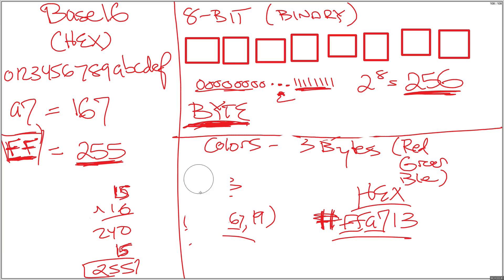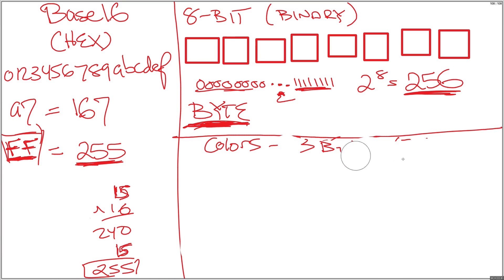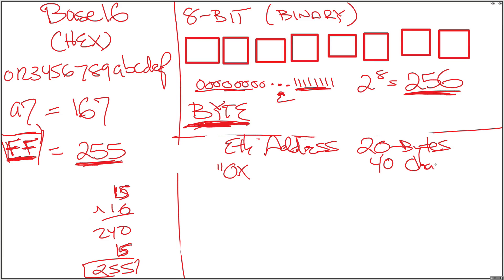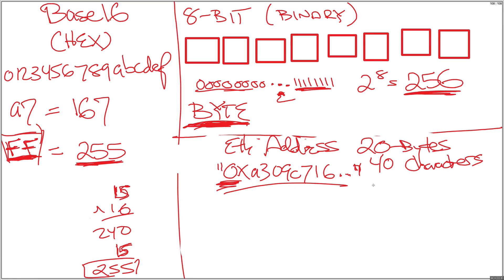In Ethereum, where you might encounter hex values, let's look at an Ethereum address. An Ethereum address is exactly 20 bytes long, so 20 bytes can be encoded as a string of exactly 40 characters, because two hex characters is one byte. You might see A3, 09, C7, 16, and so on, and this string will be 40 characters long — though it'll actually be 42 because of the 0x at the beginning, which is just an indicator that the string to follow is encoded in base 16 hex.